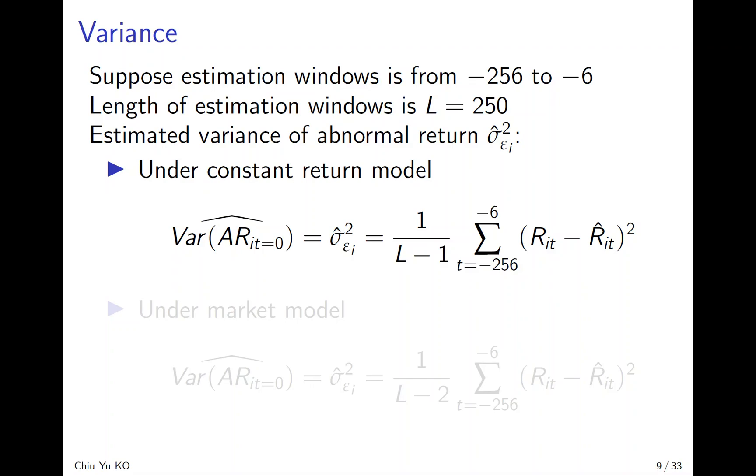Assume we used a one year estimation window with length of 250 days. First we calculate the estimated variance. Under the constant return model, the variance of abnormal return is simple. Calculate the return minus the normal return, take the square, sum over all days, and divide by the number of days minus one for unbiased estimation.